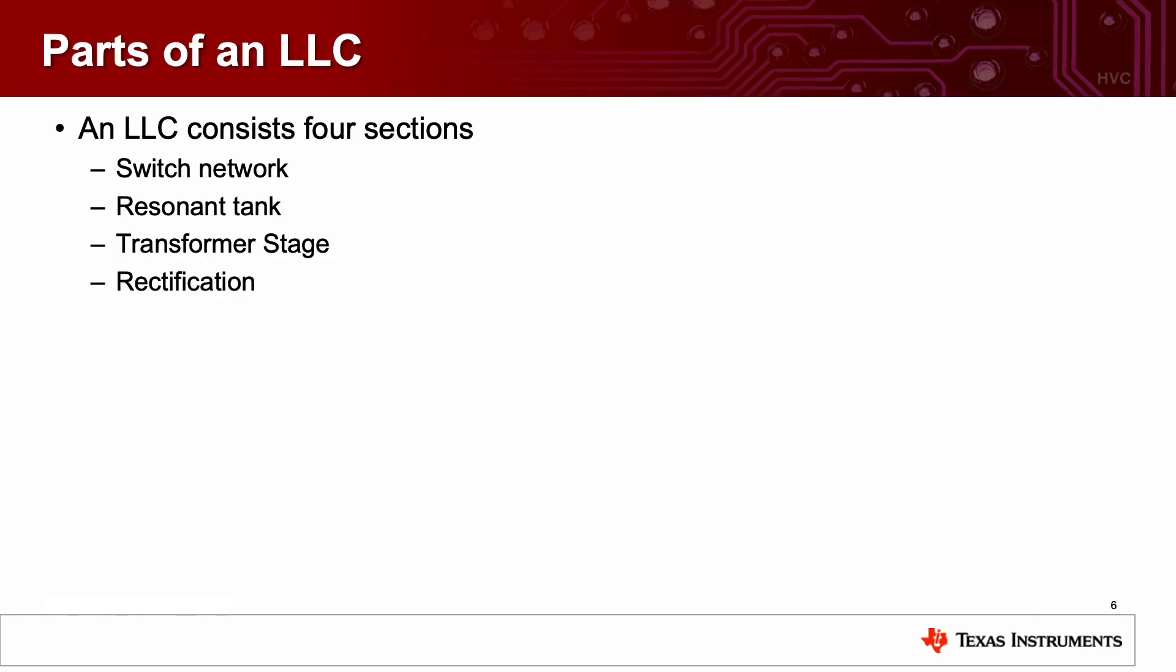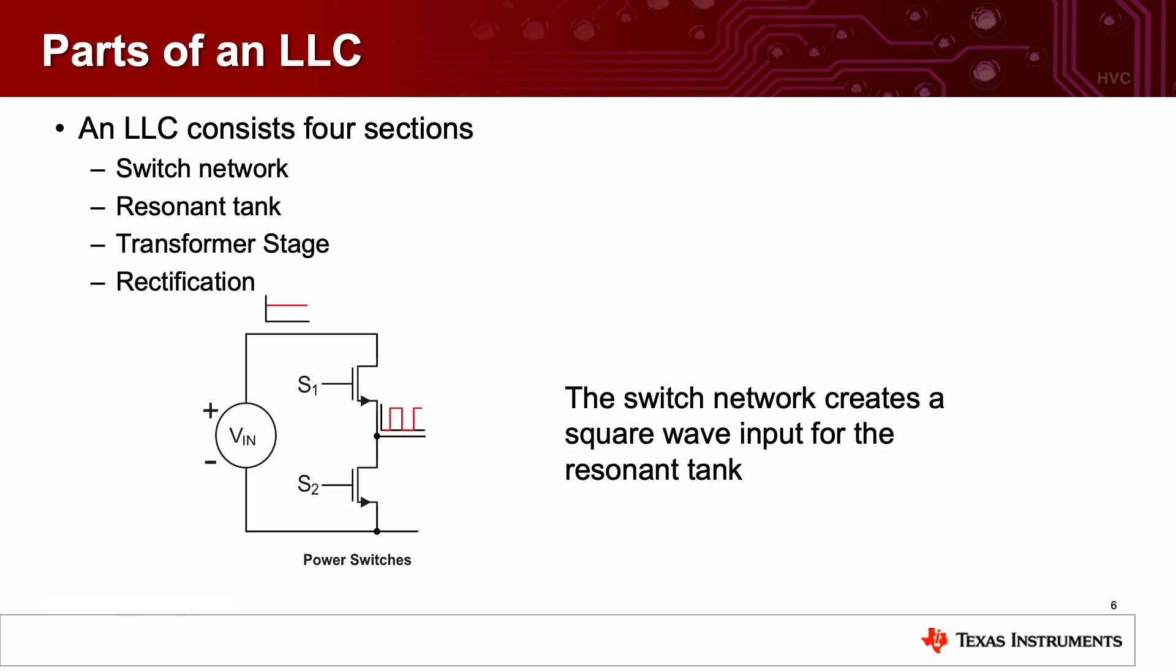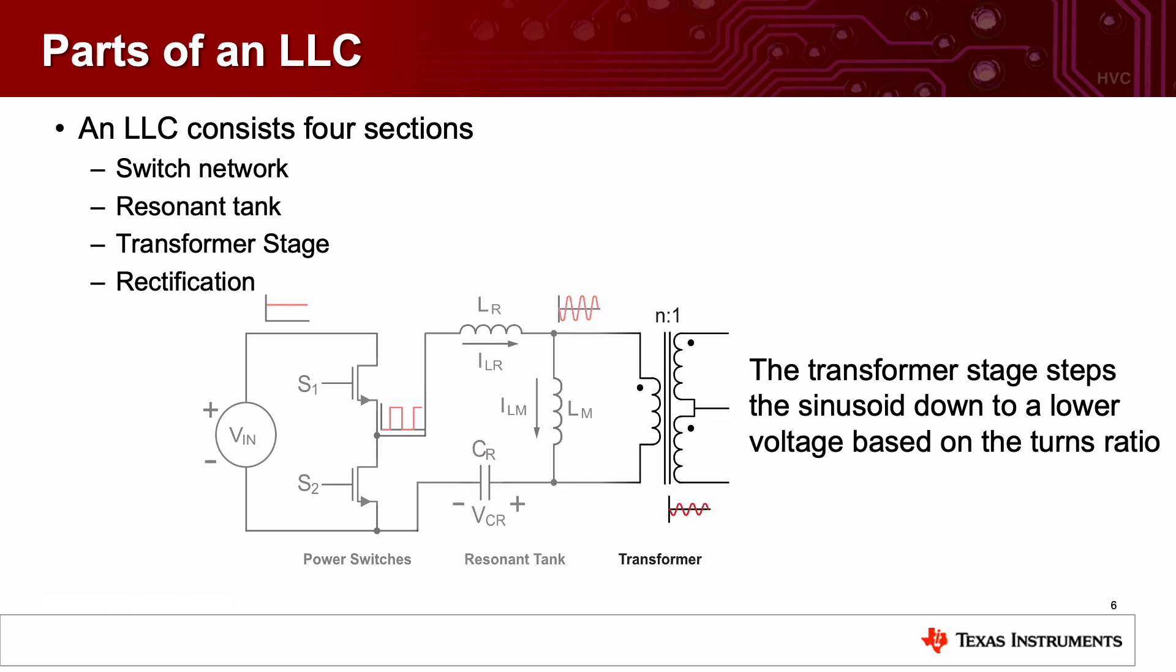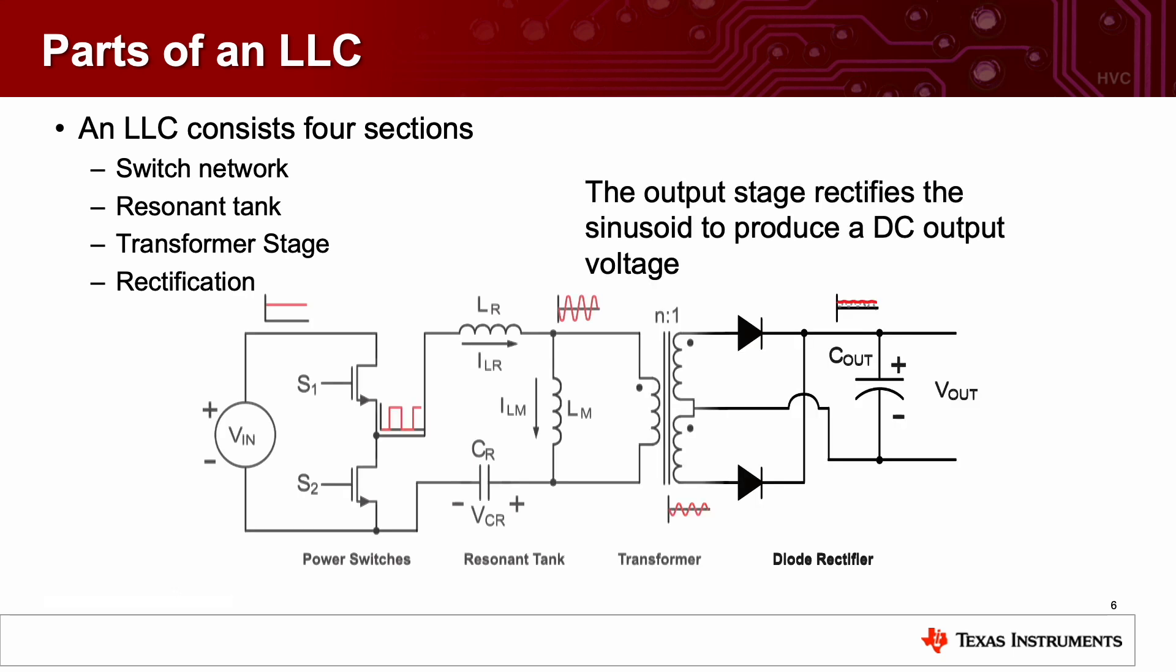What are the parts of an LLC? An LLC consists of four sections. There is a switch network, a resonant tank, a transformer stage, and then finally rectification. The switch network creates a square wave input for the resonant tank. The purpose of the resonant tank is to filter out the square wave into a sinusoidal waveform. For the half-bridge topology shown here, the peak-to-peak voltage of the sinusoid is just VIN to ground. This is also used for driving S1 and S2. The transformer stage steps the sinusoid down to a lower voltage based on the turns ratio. And last but not least is the output stage, which rectifies the sinusoid to produce a DC output voltage.